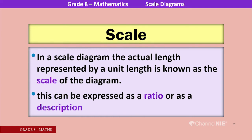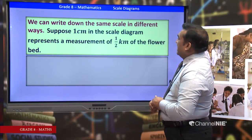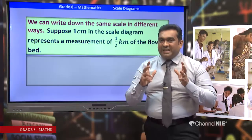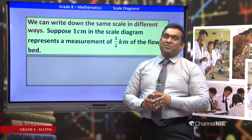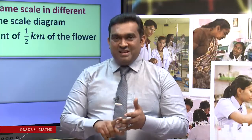There are three ways of expressing a scale: first, as a ratio; second, as a relation; third, as a description. We can write down the same scale in different ways — as a description, as a relation, and as a ratio.